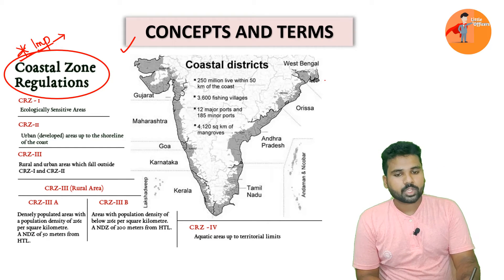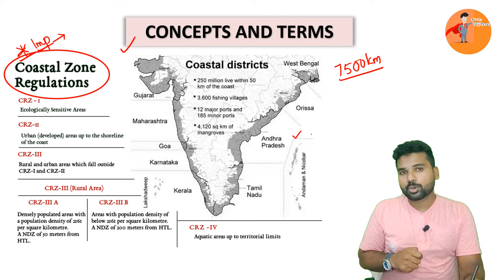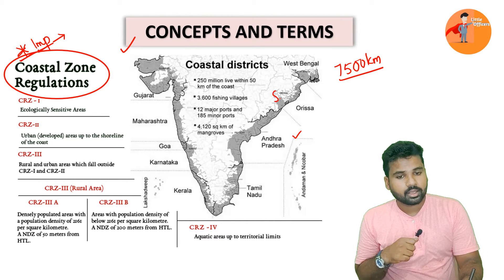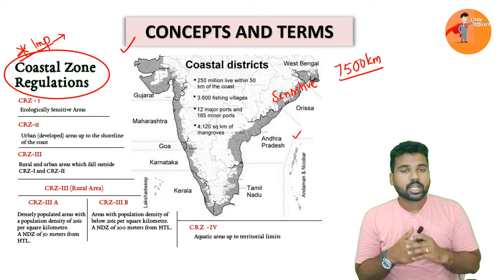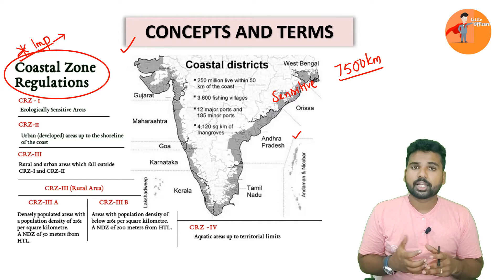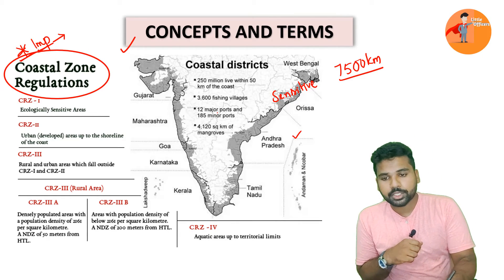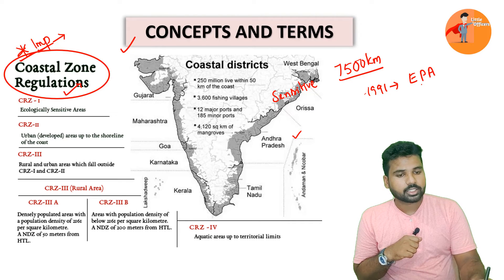India, being a peninsular country, has 7,500 kilometres of coastline including the islands. Such a long coastline means the coastal regions are very sensitive and prone to disasters like cyclones, tsunamis, and floods. As a result, certain measures must be taken with respect to development in these areas. For this purpose, the government introduced Coastal Regulation Zone notifications in 1991 using Section 5 of the Environmental Protection Act.